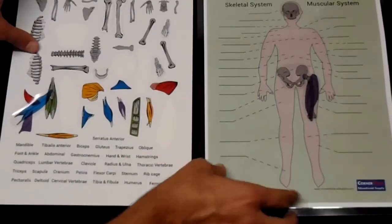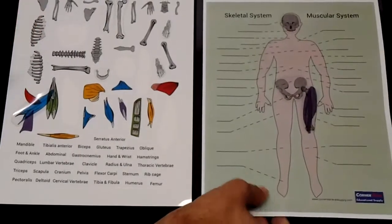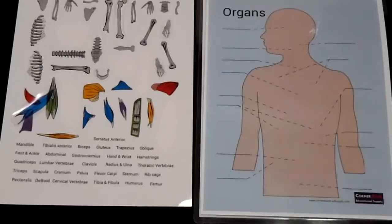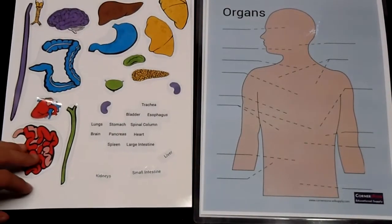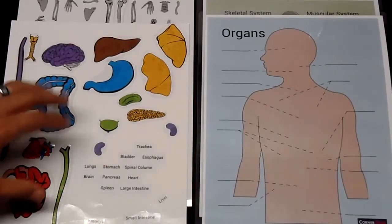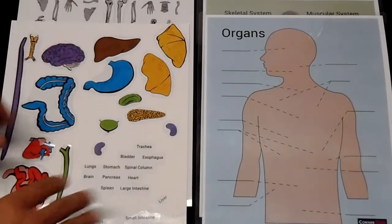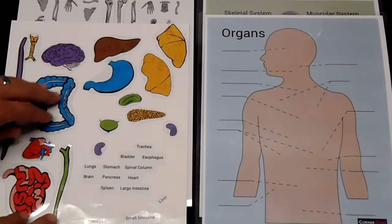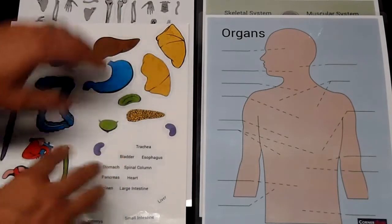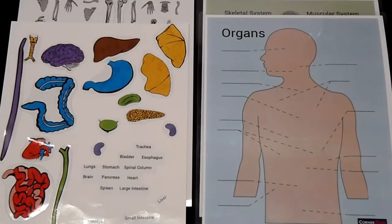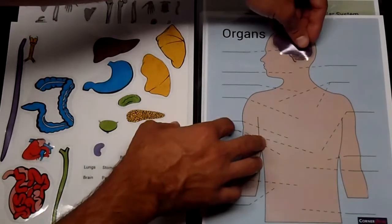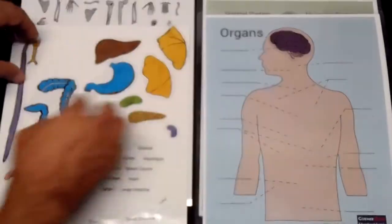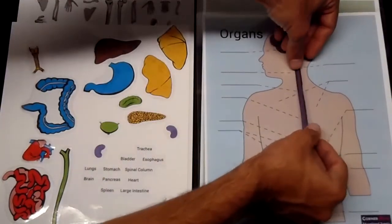So we've got our skeletal anatomy sticker set, but we also have the sticker set for our organs of the body. And for this one, what I've done is actually taken all of the back sticker parts off so that I'm leaving just the stickers themselves. So I kind of peeled off all of the other vinyl sticker material in between so that I can more easily grab and the kids can more easily grab the organs such as the brain and the spinal column and place them.